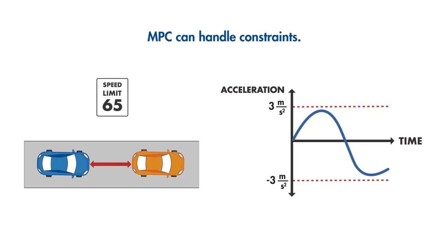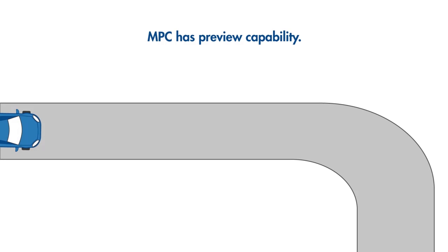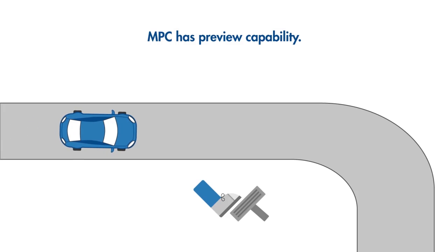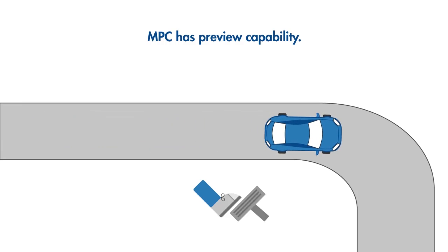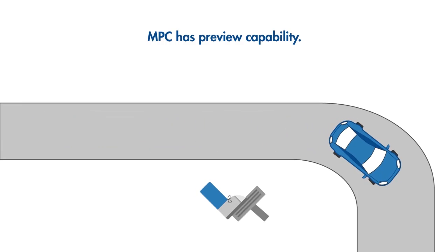Another feature of MPC is its preview capability, which is similar to feed-forward control. Let's say the autonomous car travels on a curvy road. If the controller doesn't know that there's a corner coming ahead, it will only be able to apply brakes while it's taking the corner.